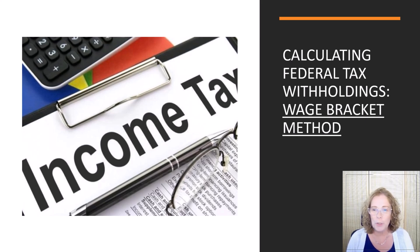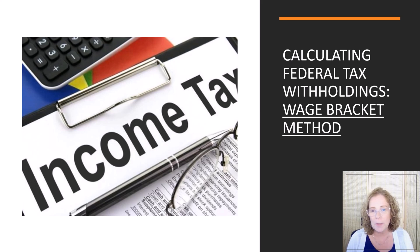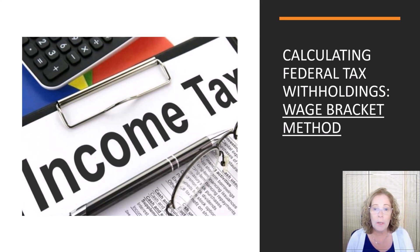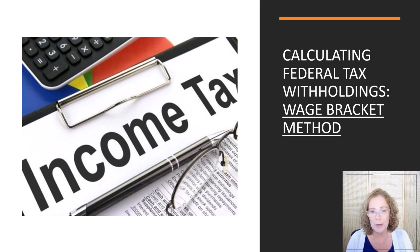In prior videos, you learned how to calculate gross pay and whether the employee's payments for fringe benefits are pre-tax or post-tax deductions. Now we're ready for the next step of calculating federal income tax withholdings under the wage bracket method, one of the ways to calculate federal income tax. Another way is the percentage method of calculating federal income tax, which is covered in a separate video.